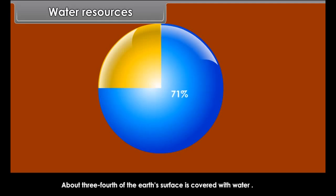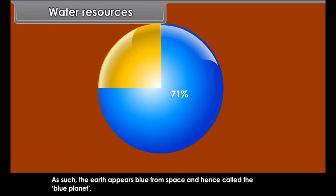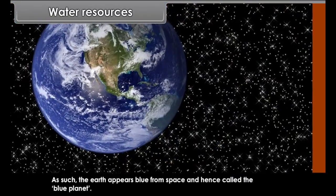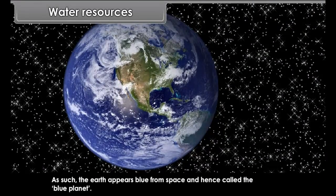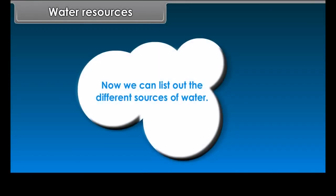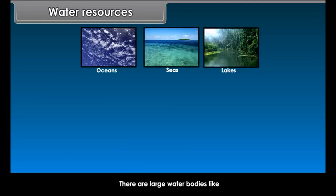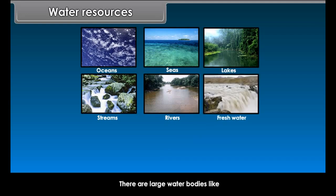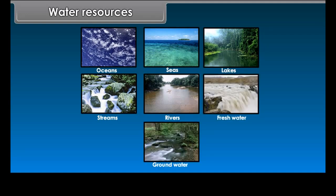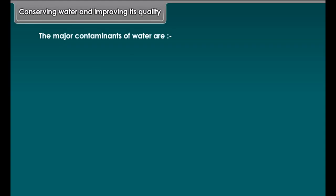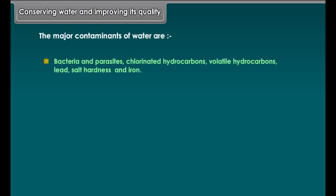Water resources. We all know that water is essential for all forms of life. Do you know why earth is called the blue planet? About three-fourths of the earth's surface is covered with water — 71%. As such, the earth appears blue from space and hence is called the blue planet. We can list out the different sources of water. There are large water bodies like oceans, seas, lakes, streams, rivers, freshwater, groundwater, etc. These are the different sources of water on earth.